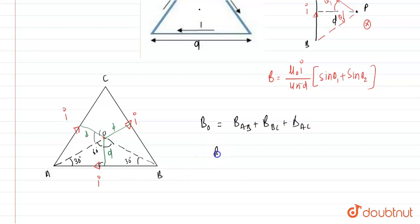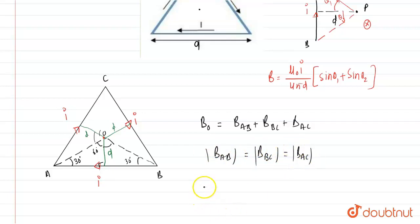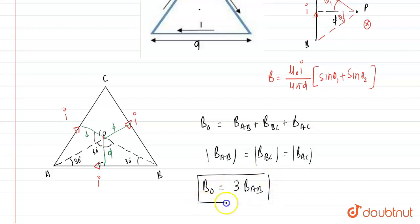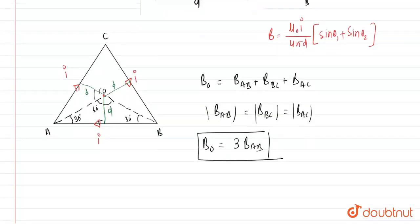Since |B_AB| = |B_BC| = |B_AC|, the total magnetic field at the center equals three times the magnetic field due to wire AB. So we now need to find the magnetic field due to wire AB and multiply by three.